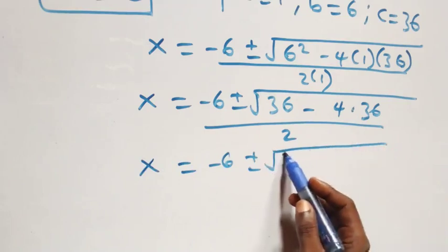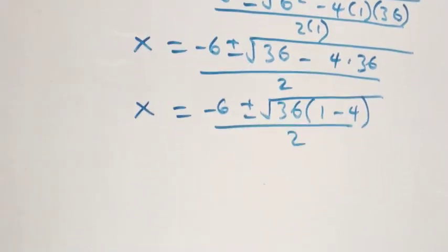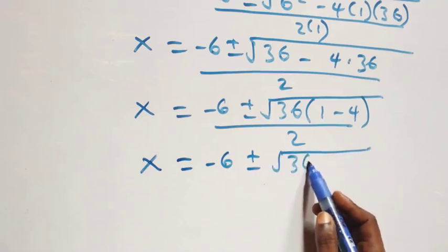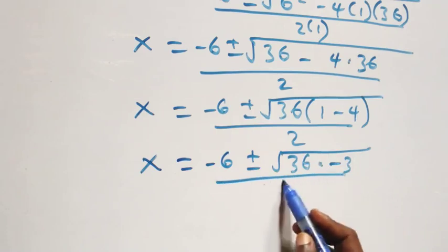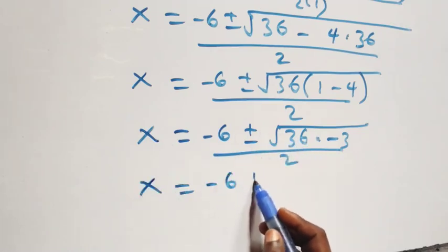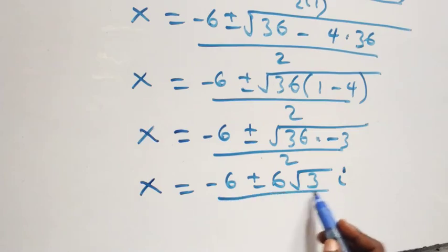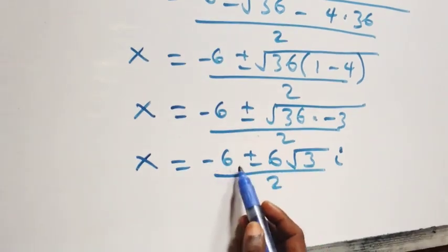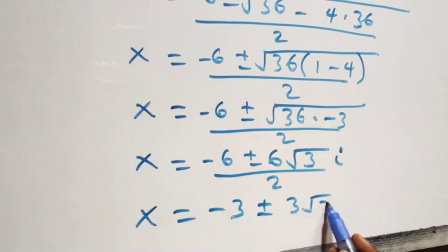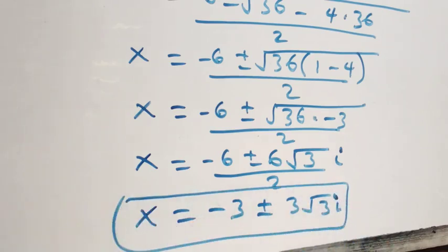Simplifying under the radical: x = (-6 ± √(36 × (1 - 4))) / 2 = (-6 ± √(36 × -3)) / 2. Bringing out √36 as 6 gives x = (-6 ± 6√3 i) / 2, which simplifies to x = -3 ± 3√3 i. These are two more complex solutions.